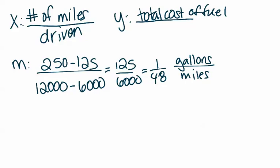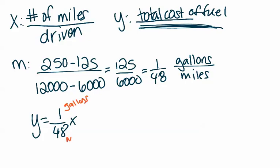So then it asks us to write the equation. So we still haven't quite done that. So remember that the equation is the total cost of fuel. So if you think about what the total cost of fuel is, the total cost of fuel is going to be y equals 1 over 48x because that's going to be the number of gallons. I kind of just put some notes in here for you.